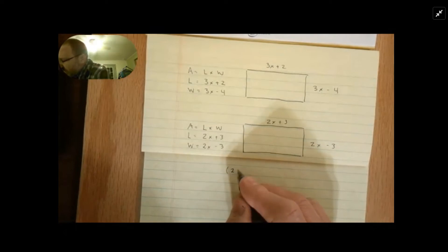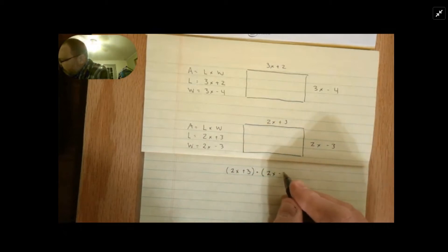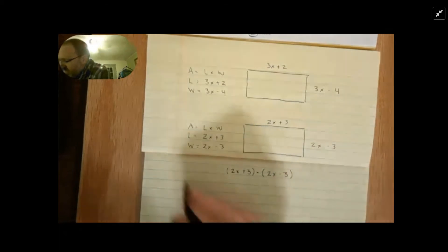So I put down the length 2x plus 3 times the width, which is 2x in my case minus 3. And we're going to use what we call the FOIL method, FOIL.